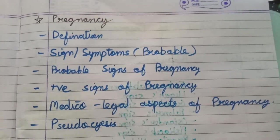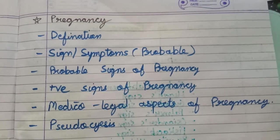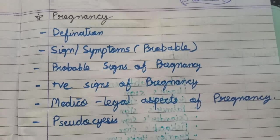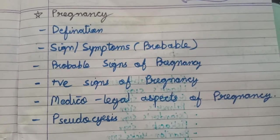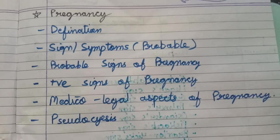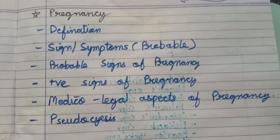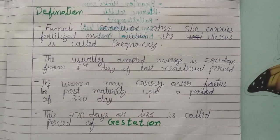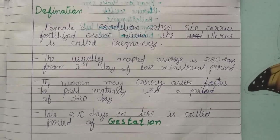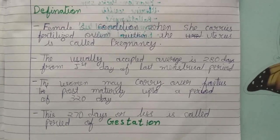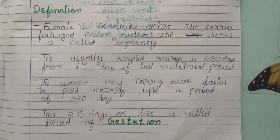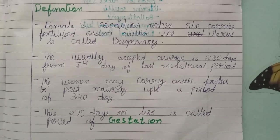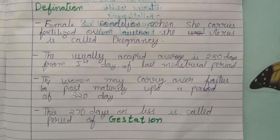Our today's topic is pregnancy. We will go through the definition, signs and syndromes — that is presumptive signs of pregnancy, probable signs of pregnancy, medical legal aspects of pregnancy, and pseudocyesis. A female's condition when she carries the fertilized ovum within the uterus is called pregnancy.